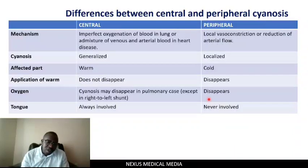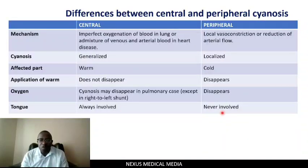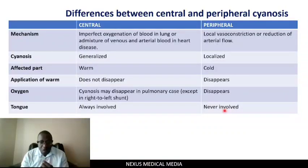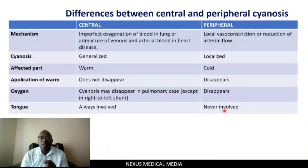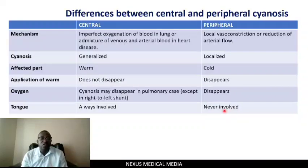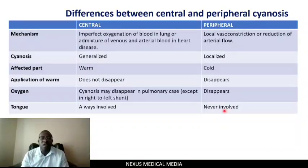Looking at the tongue: the tongue is always involved in central cyanosis and never involved in peripheral cyanosis. Remember, the tongue is in the oral cavity, is always warm, and has a good blood supply. That is what you need to remember on the differences between central and peripheral cyanosis.